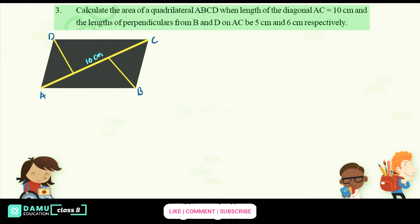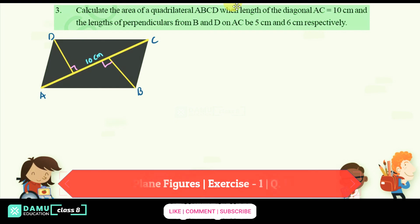The perpendicular lengths from B and D on AC are given. These are making 90 degrees. From B it is 5 cm, and from D it will be 6 cm. So those are the values given.